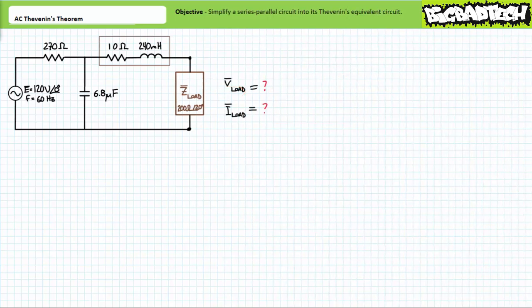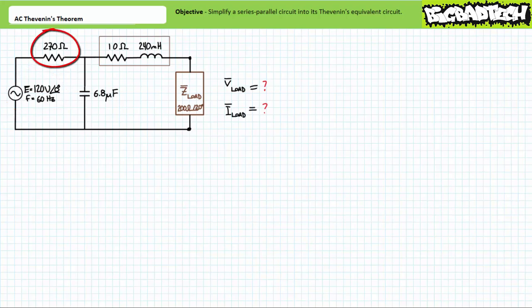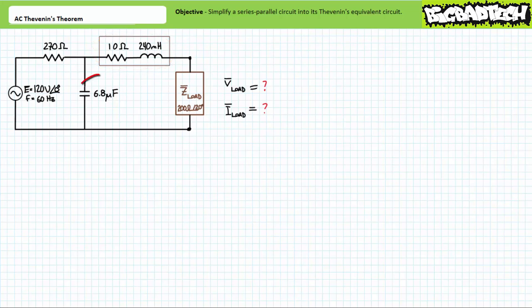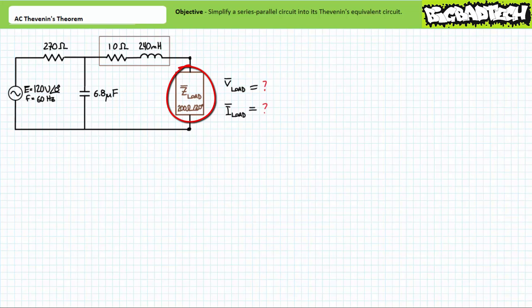As a demonstration of the utility of Thevenin's Theorem, consider the following series-parallel circuit consisting of a 120-volt 60-hertz AC voltage source and four elements: a 270-ohm resistor, a non-ideal 240-millihenry inductor that happens to have 10 ohms of internal resistance, a 6.8-microfarad capacitor, and a variable load impedance ZLOAD, currently set to 200 ohms at an angle of 20 degrees hooked in the following fashion. We're being asked to determine the anticipated voltage across the load, VLOAD, and the current through the load, ILOAD.